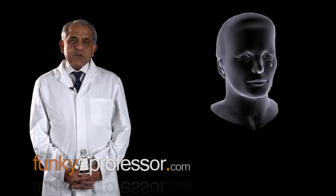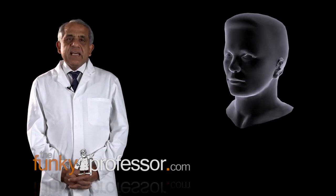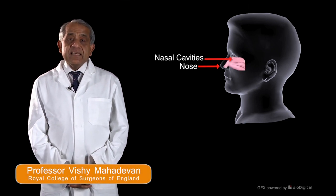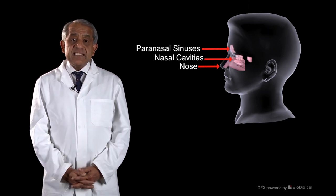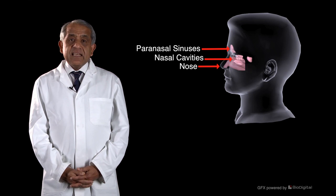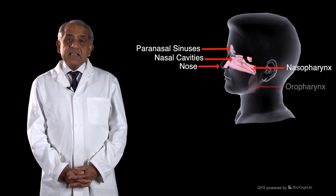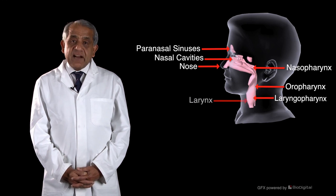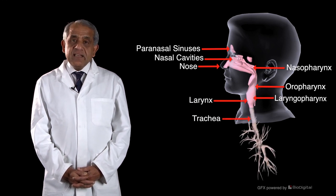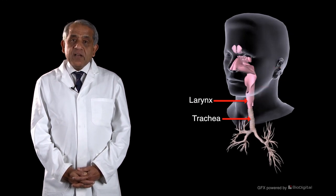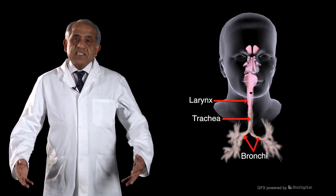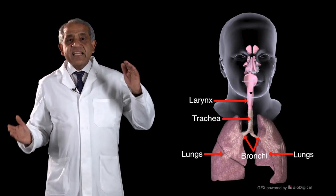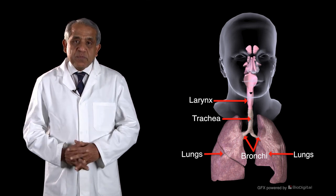The respiratory tract is made up of the nose, the nasal cavities, the paranasal sinuses, the nasopharynx, oropharynx, laryngopharynx, larynx, trachea, bronchi, further subdivisions of the bronchi, and the lungs. So that is the extent of the respiratory tract.